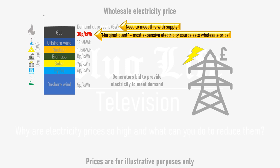In this scenario, even although some generators have offered to provide electricity at 5 pence per kilowatt hour, everyone gets paid the most expensive price of 30 pence per kilowatt hour. Technically, the wholesalers of that electricity will get paid 30 pence per kilowatt hour.